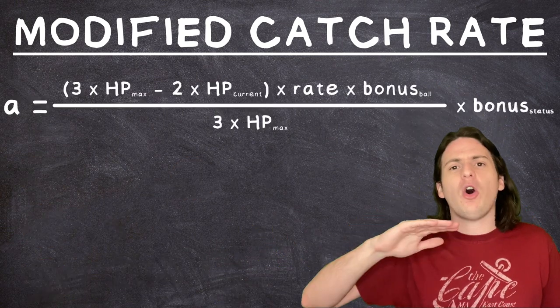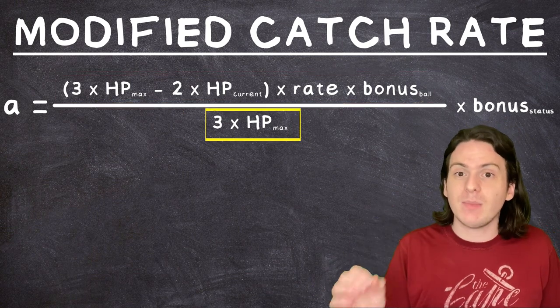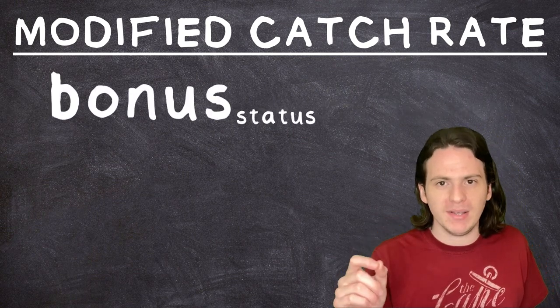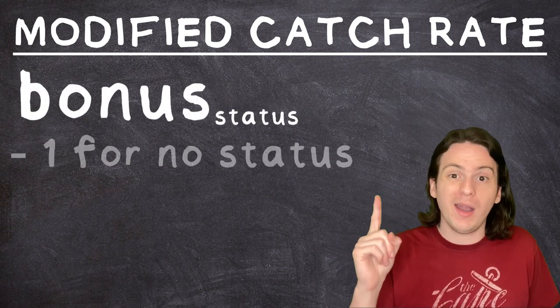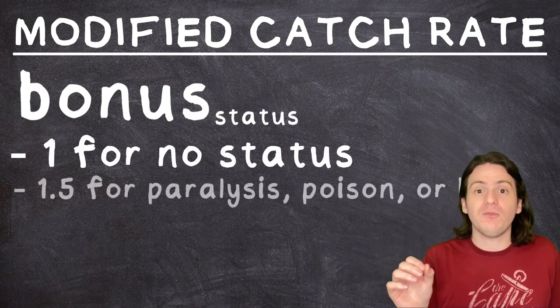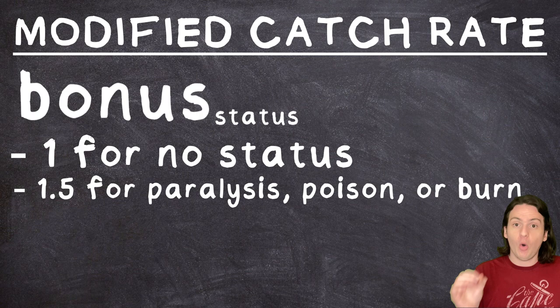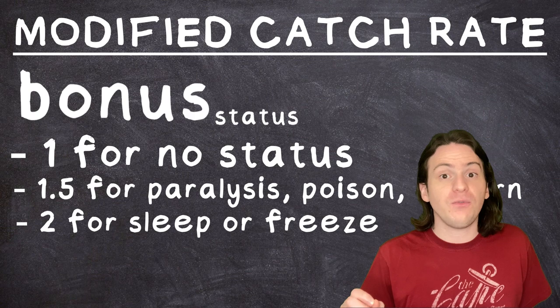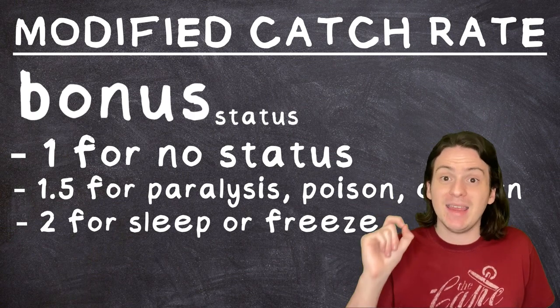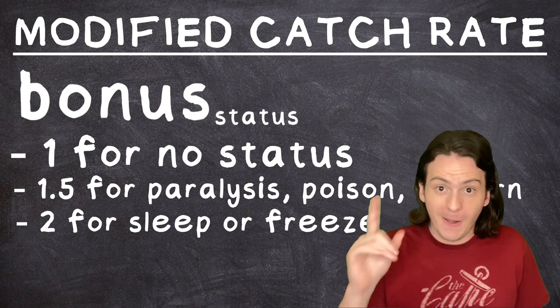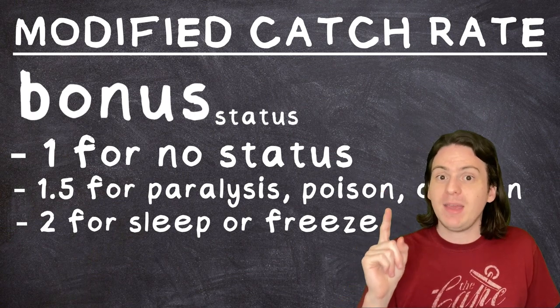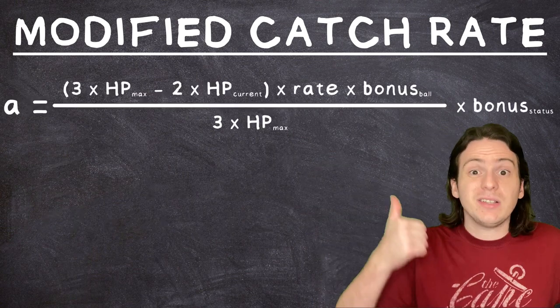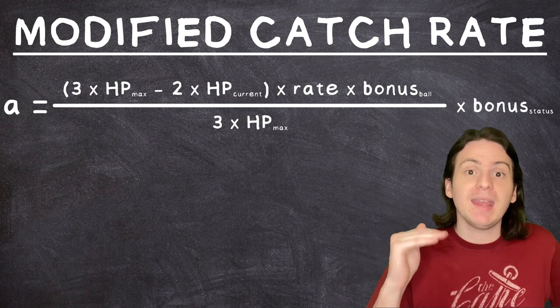Then we just divide this whole section by three times the maximum HP again, and then finally multiply that by the status bonus. This bonus is a 1 for any unstatused Pokémon, a 1.5 if they are paralyzed, poisoned, or burned, and a 2 if they are asleep or frozen. Confusion does not count as a status in this instance, so it doesn't get a bonus here, but that's actually good news because it means if someone tried to catch you right now, they wouldn't have as easy of a time of it. This whole formula here will get you the modified catch rate. Again, a higher number here means it's easier to catch.